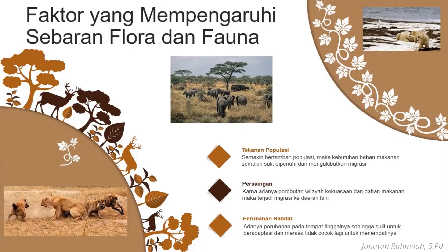Kita lanjut ke faktor yang mempengaruhi sebaran flora dan fauna secara umum. Ada beberapa faktor. Yang pertama, tekanan populasi. Tekanan populasi ini: semakin banyak hewan di suatu wilayah, maka kebutuhan bahan makanan semakin sulit dipenuhi oleh hewan-hewan yang ada di wilayah tersebut. Jadi, si hewan akan mengalami migrasi ke daerah lain.